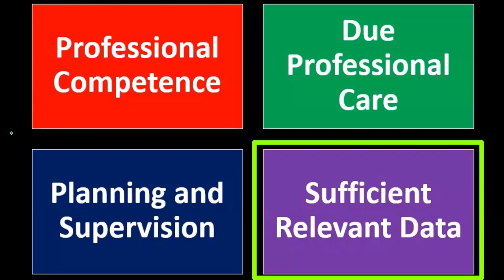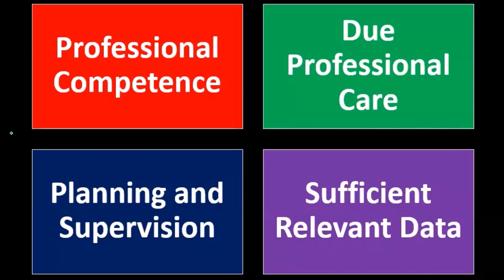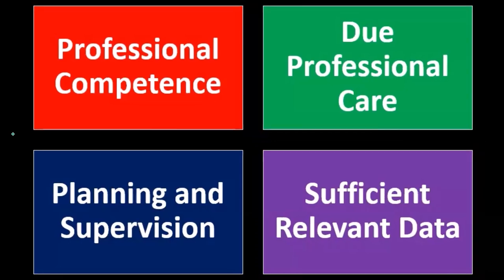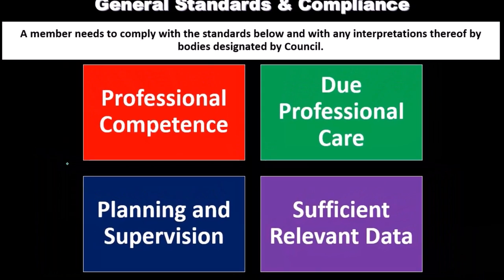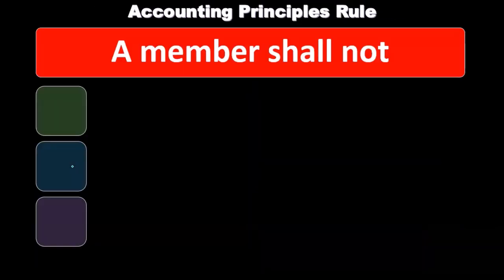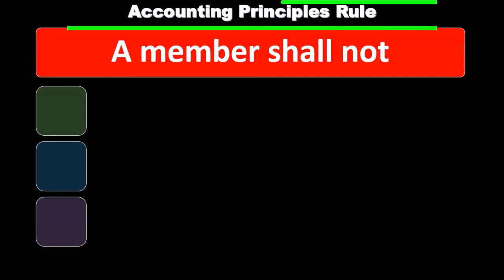Sufficient relevant data — we want to make sure that we compile sufficient relevant data with regards to an audit process. That's going to be our audit evidence. We've got to make sure that we do the due diligence, do the audit process, and make sure that we have the evidence to support the opinion that is given. Now we'll discuss accounting principles and rules.